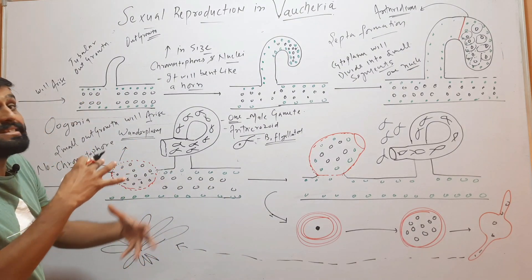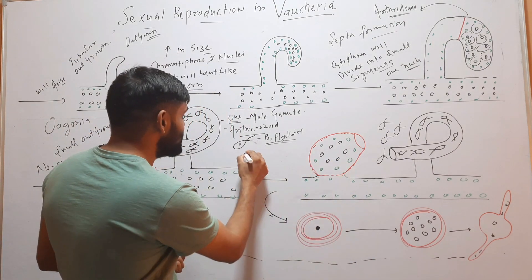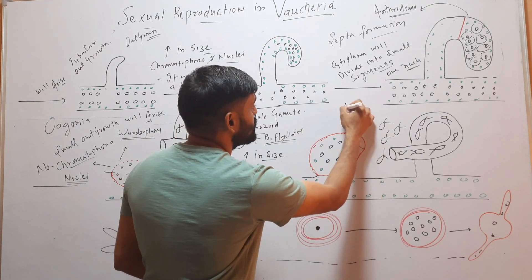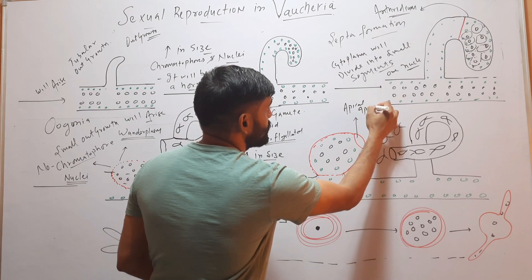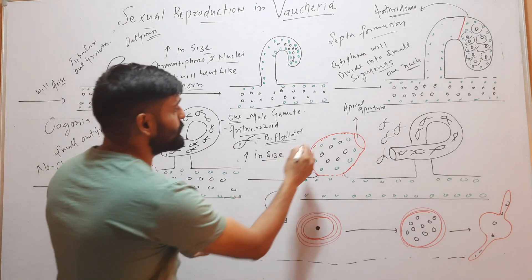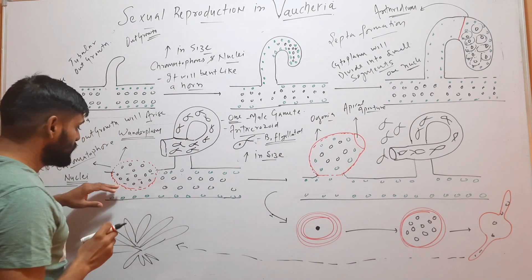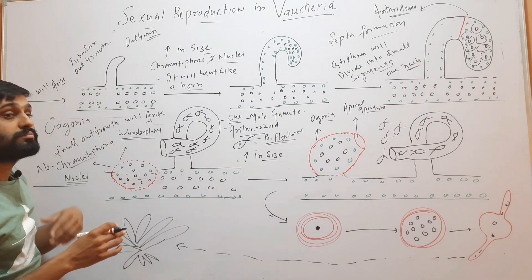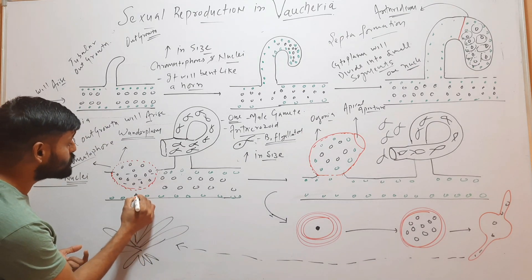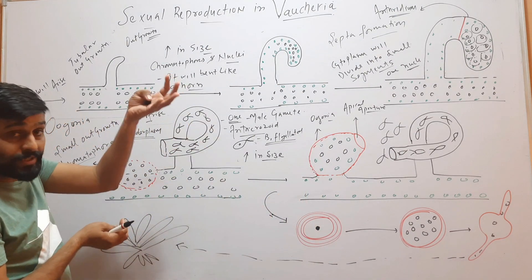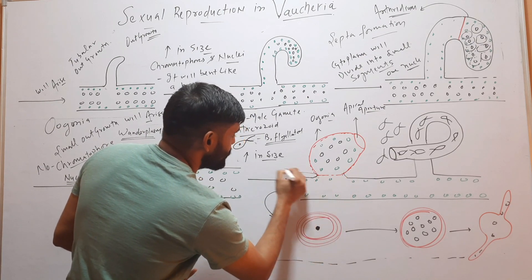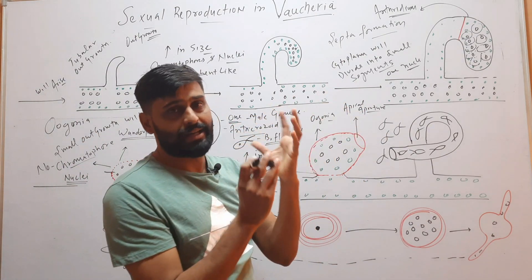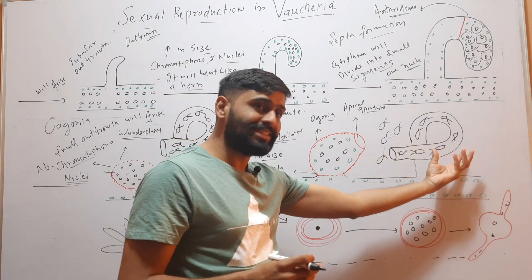This outgrowth will increase in size and become rounded, and at the tip it forms an apical aperture — this structure is now called the Oogonium. Initially, when Oogonium development started, only nuclei were present, but as it grows in size, some chromatophores also migrate into it. After the chromatophores move in, a septum forms, separating it from the rest of the filament. It then increases in size and forms an apical aperture. Now we have two fully formed structures: the Antheridium and the Oogonium.